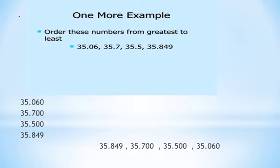Here is another example. Order these numbers from greatest to least. Greatest to least means you have to write the numbers in order from biggest to smallest. The numbers are: 35.06, 35.7, 35.5, 35.8, and 49. The first step is to line up the decimal points.